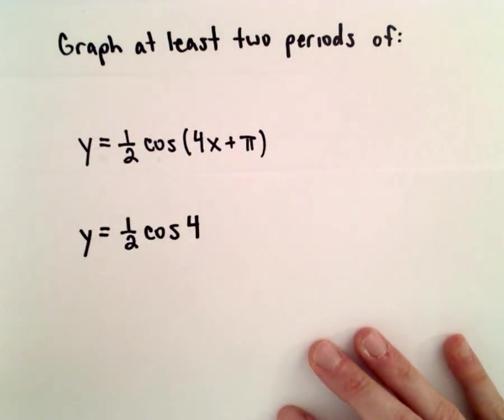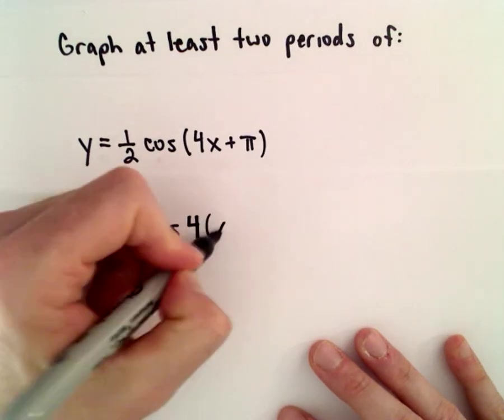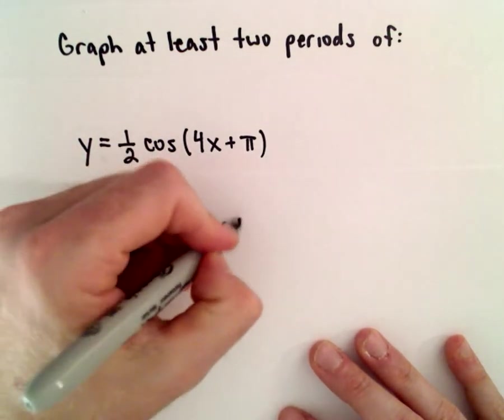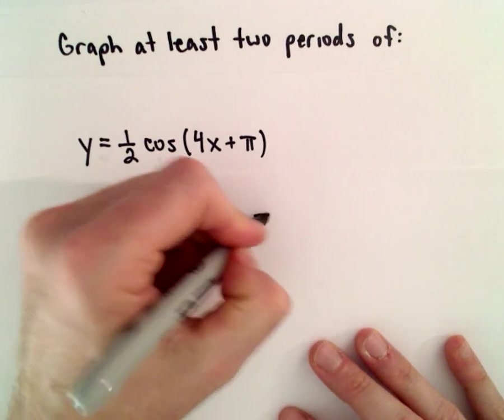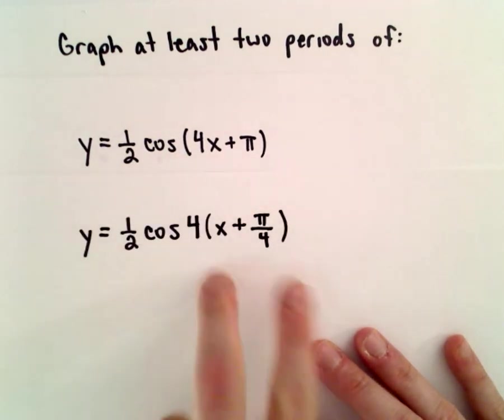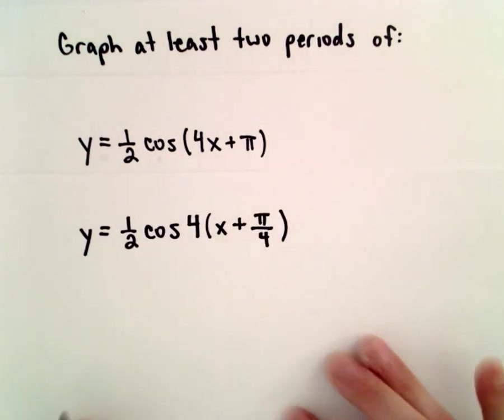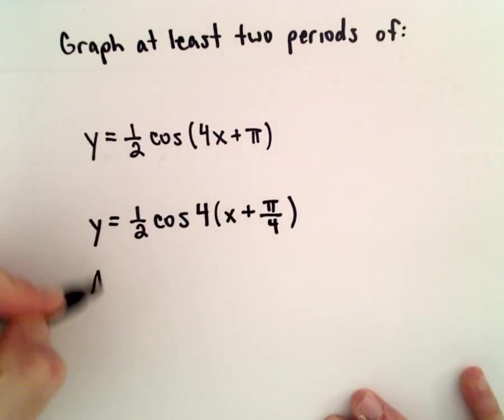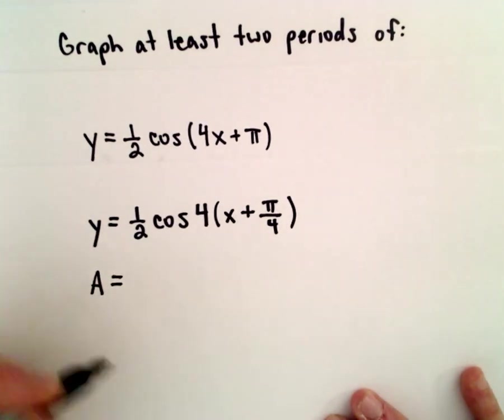So to do that, we would simply have to factor out the four. Well, 4 times x would give us 4x, and 4 times pi over 4 would give us pi. So we're just rewriting this, and the reason why I'm doing this is so that I can pick out the period a bit easier.